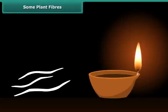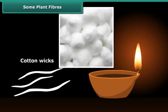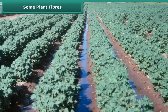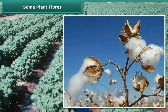Some plant fibers: Have you ever made wicks of earthen lamps during Diwali festival? Do you know that they are made up of cotton? This cotton is obtained from cotton plants, which are grown at places having black soil and warm climate. The fruits of the cotton plant, after maturing, burst open and seed-covered cotton is obtained.